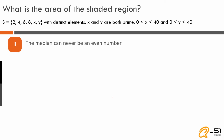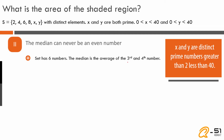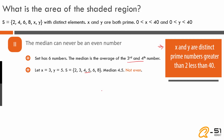Statement 2 says the median can never be an even number. With six numbers in the set, the median is the average of the third and fourth numbers when written in ascending order. We'll test values: with x=3 and y=5 (the two smallest primes other than 2), the set in ascending order is 2, 3, 4, 5, 6, 8. The median is (4+5)/2 = 4.5, which is not even.